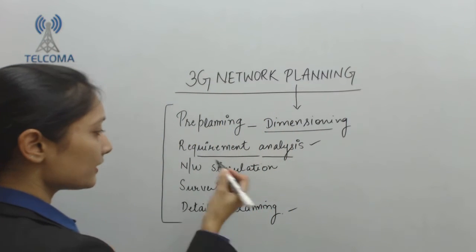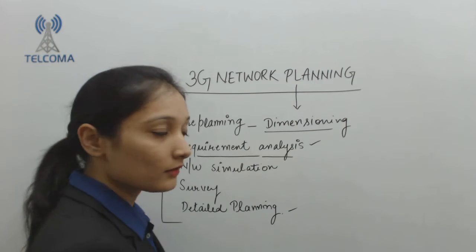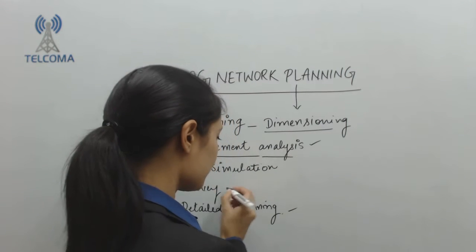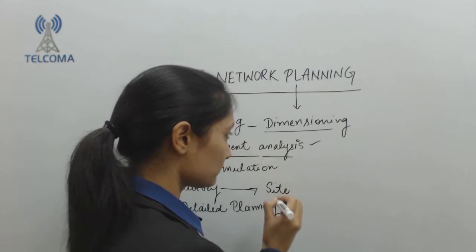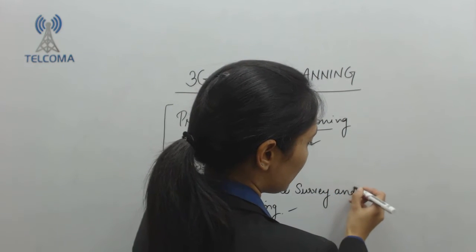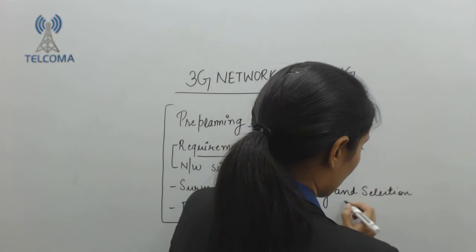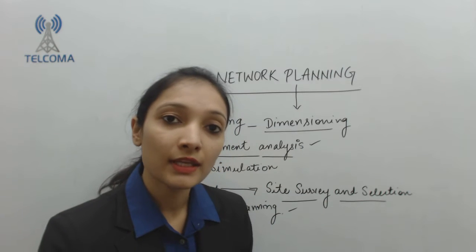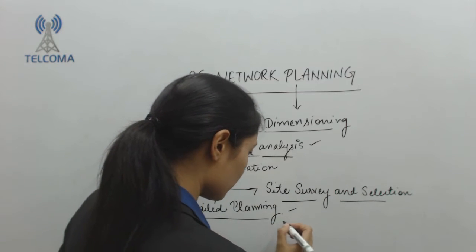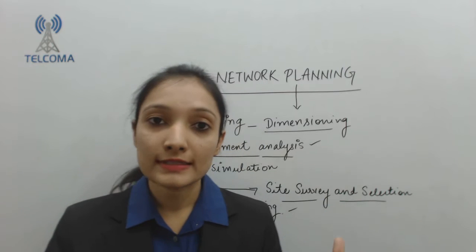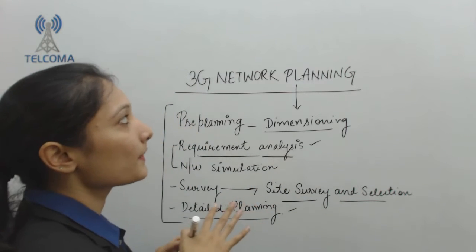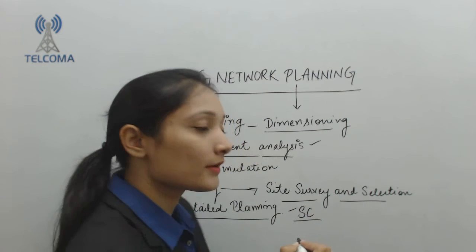Network simulation tools are also carried out together with requirement analysis. After that, we have the survey and detailed planning. The survey includes site survey and site selection — a proper area must be chosen to deploy the 3G network. Detailed planning covers parameters like frequency planning, coverage and capacity planning, and importantly, code planning, which is critical in 3G networks.